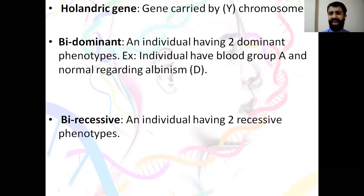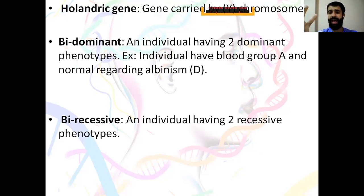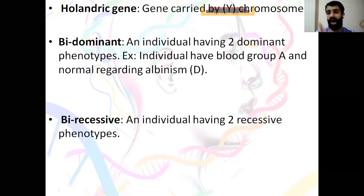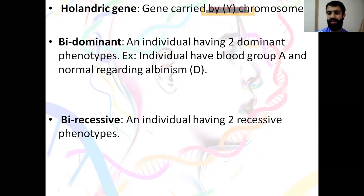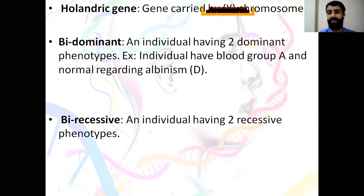Bidominant means having two dominant phenotypes. For example, blood group A is dominant, and being normal regarding albinism (capital D) is dominant over albino (small a). So having two dominant phenotypes — one for blood group and one for albinism — is called bidominant. Birecessive means an individual having two recessive phenotypes: for example, blood group O (recessive) and albino (recessive). This is called birecessive.